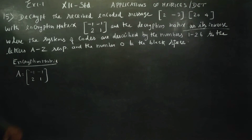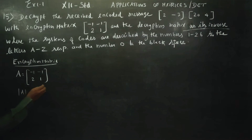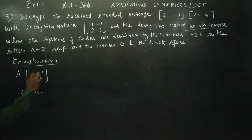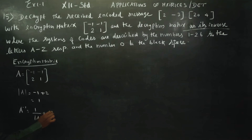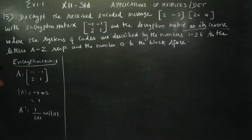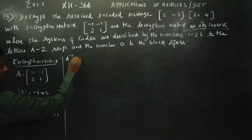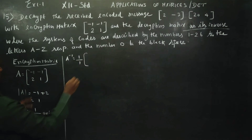Now we find the decryption matrix, which is the inverse of the encryption matrix. The determinant of A equals the right-hand side minus the left-hand side: minus 1 minus minus 2, which gives the answer 1. So A inverse equals 1 over determinant A, multiplied by the adjoint of A.